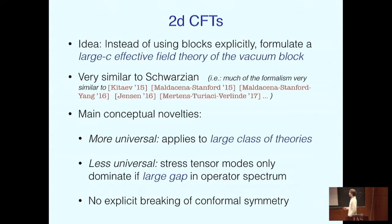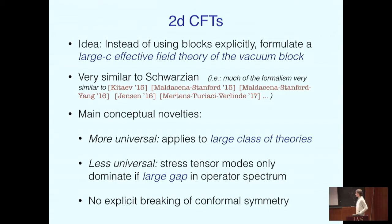This theory will be conceptually different from the Schwarzian in a few ways. In some sense it is more universal than the Schwarzian, because I don't have to specify the theory — I can talk about a large class of two-dimensional CFTs. But in some sense it is also less universal, because we need to make sure that the stress tensor exchanges described by the identity block actually dominate the correlation functions. For this to be true, you need to assume something like a large gap in the spectrum. So it is perhaps just a higher-dimensional version of that story.